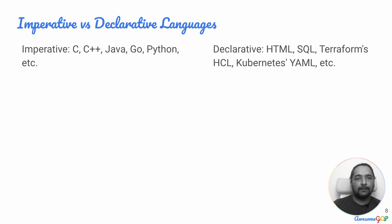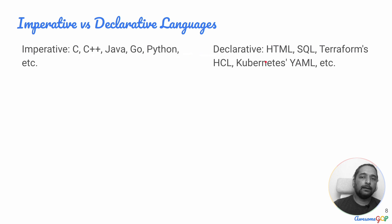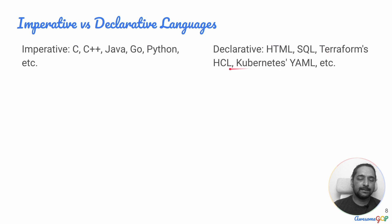The kinds of languages that are imperative would be things like C, C++, Java, Go, and Python. Declarative examples would be HTML, SQL, Terraform's HCL, and Kubernetes' YAML configuration language.